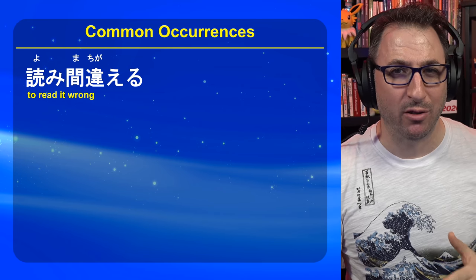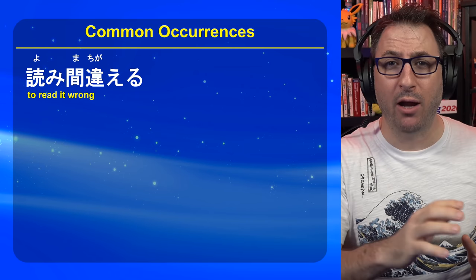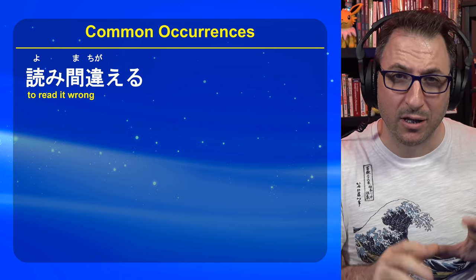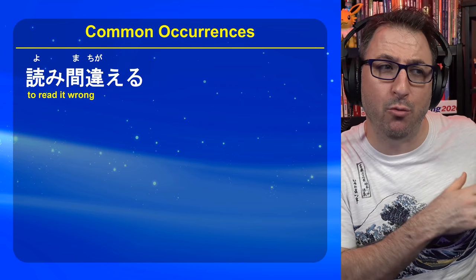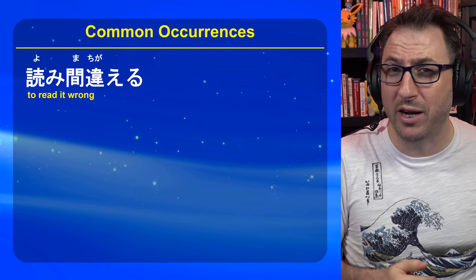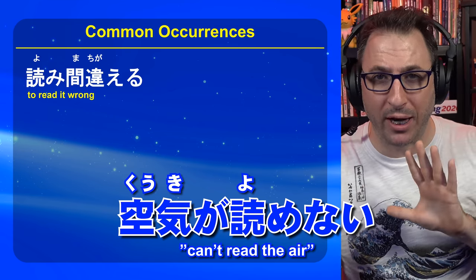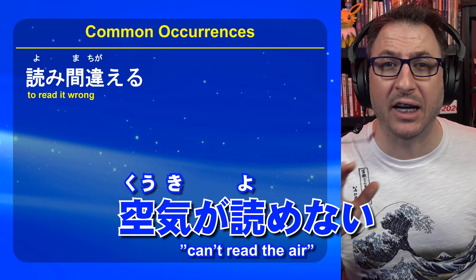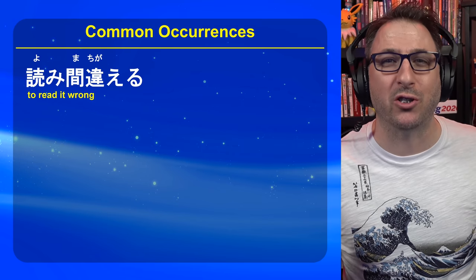読み間違える means to read something wrong. Notice we have the verb 読む, to read. If we made 読む into the masu form, 読みます, we drop the masu and we're left with 読み. Not only can you misread a character — hiragana or kanji — you can also misread the situation. For example, 空気が読めない means cannot read the air. So you could say 空気を読み間違えた — I misread the air — meaning you are situationally unaware, you misunderstood what was happening.